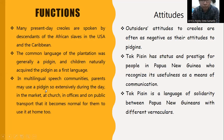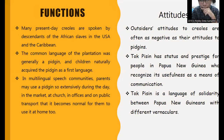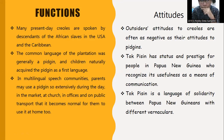Regarding function: many present-day creoles are spoken by descendants of African slaves in the USA and Caribbean. The common language of the plantation was generally a pidgin, and children usually acquired the pidgin as a first language. In multilingual speech communities, parents may use pidgin so extensively — in the market, at church, in offices, and on public transport — that it becomes normal to use it at home too. Regarding attitude: outsiders' attitudes toward creoles are often negative, similar to their attitudes toward pidgins. However, for people in Papua New Guinea, Tok Pisin is recognized for its usefulness as a means of communication and as a language of solidarity among Papua New Guineans with different vernaculars.